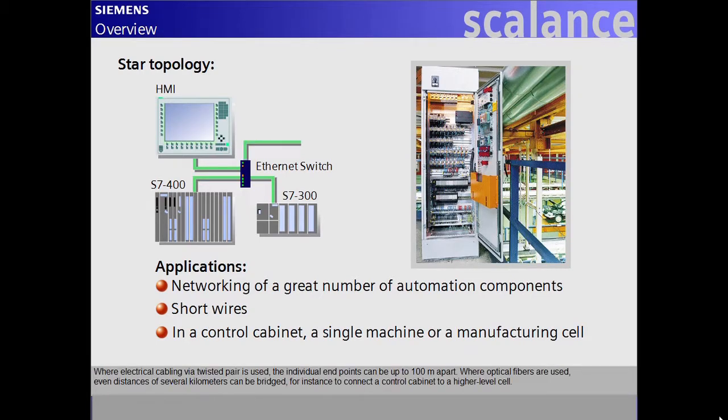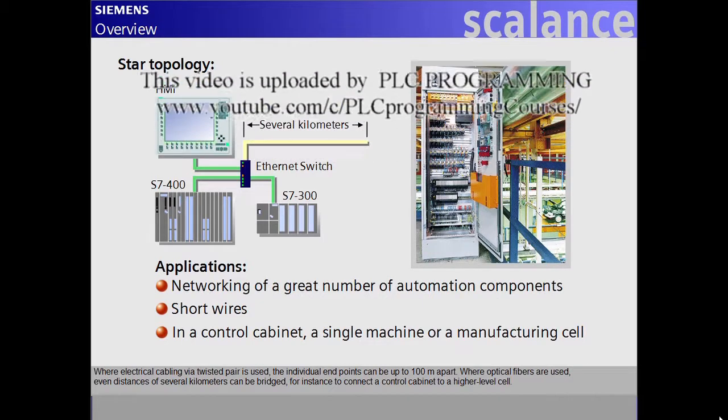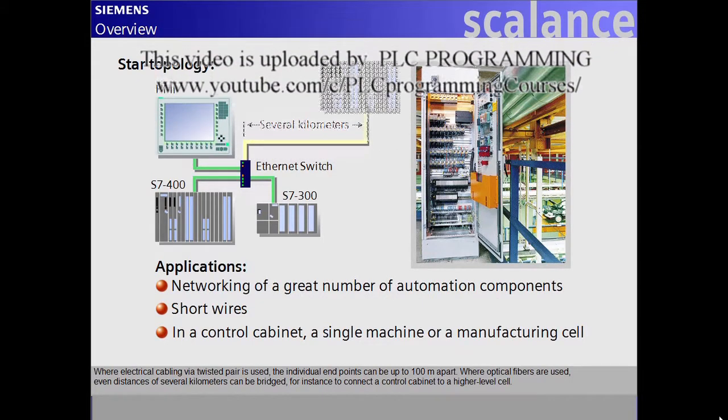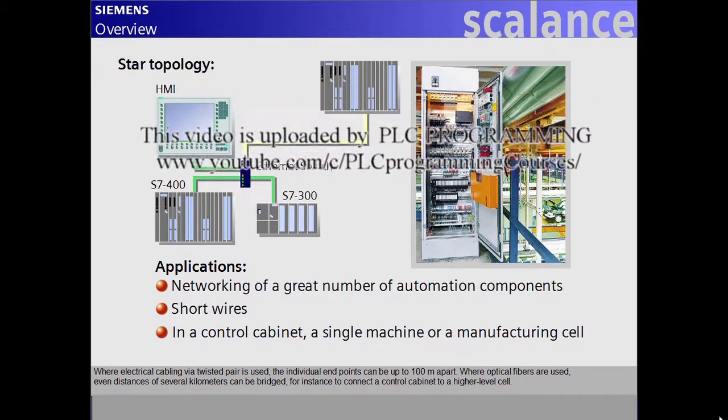Where electrical cabling via twisted pair is used, the individual endpoints can be up to 100 meters apart. Where optical fibers are used, even distances of several kilometers can be bridged, for instance, to connect a control cabinet to a higher level cell.